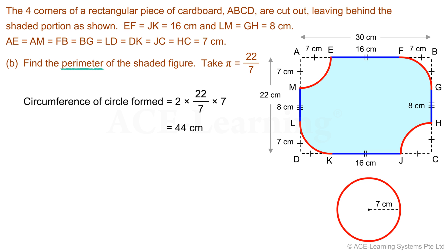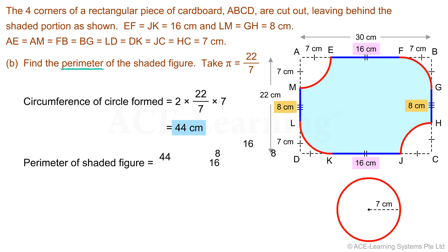Now that we have the necessary dimensions, we can find the perimeter of the shaded figure. The perimeter equals the sum of 44, 16, 8, 16, and 8. The sum is 92 centimeters.